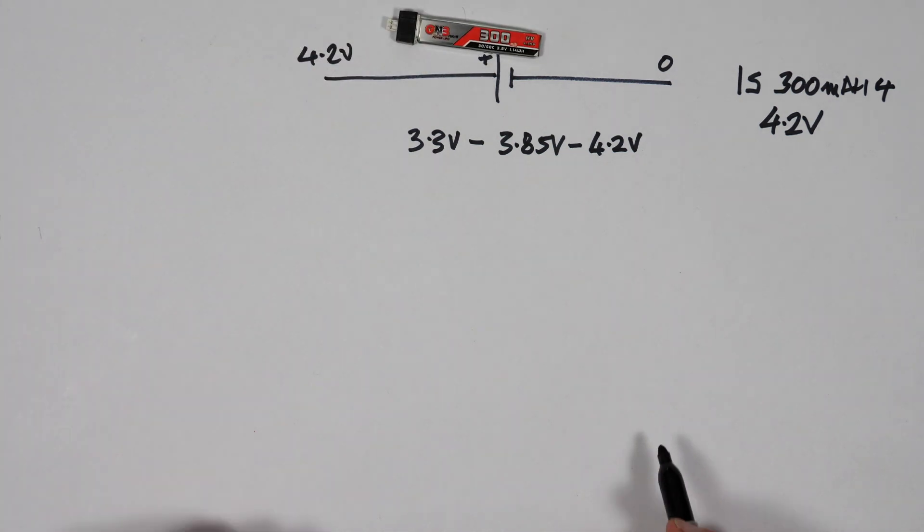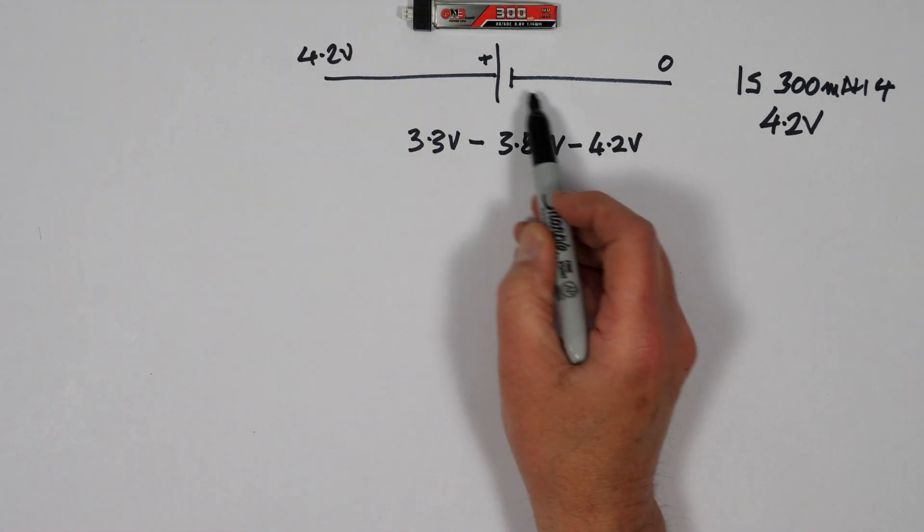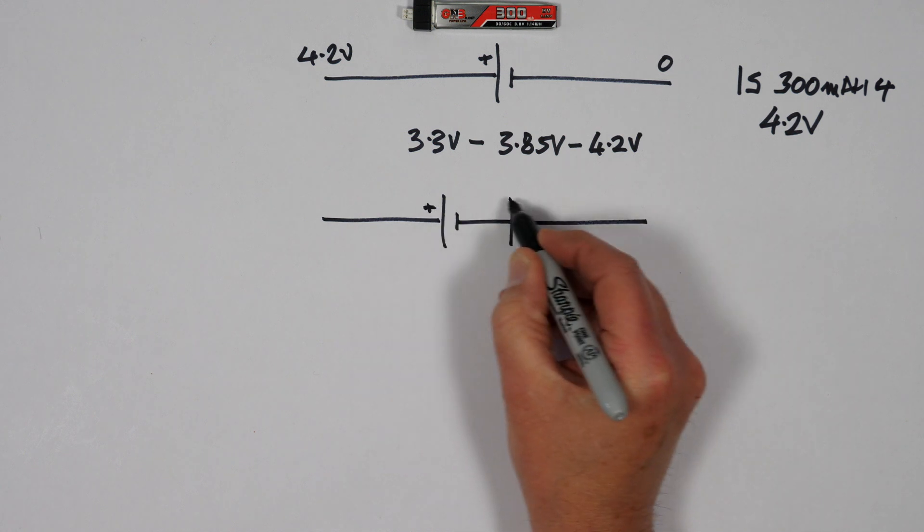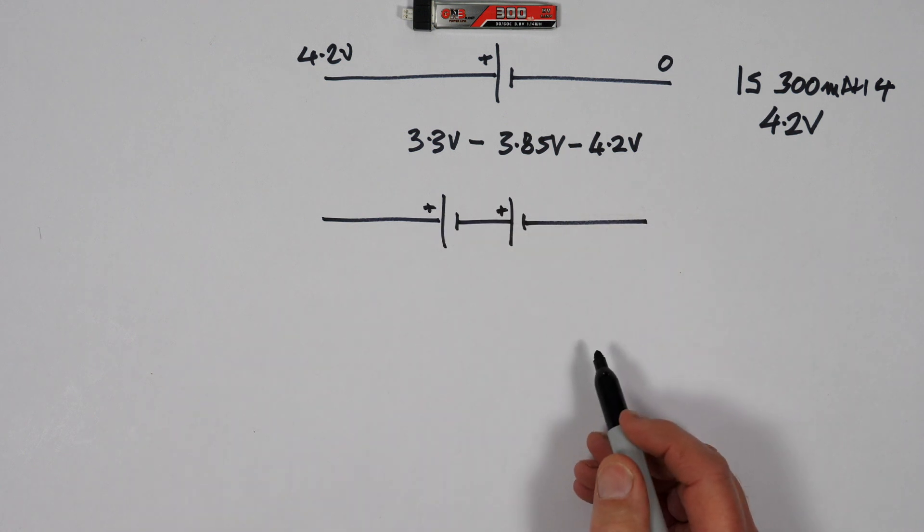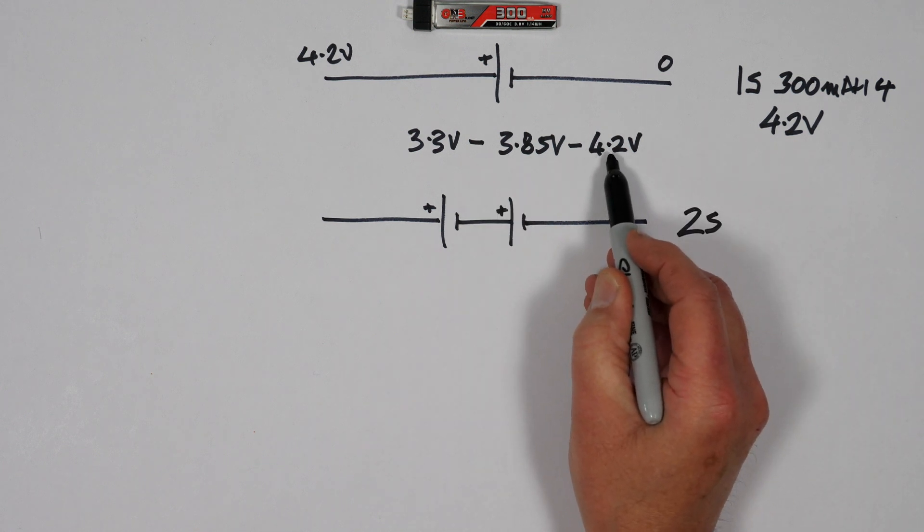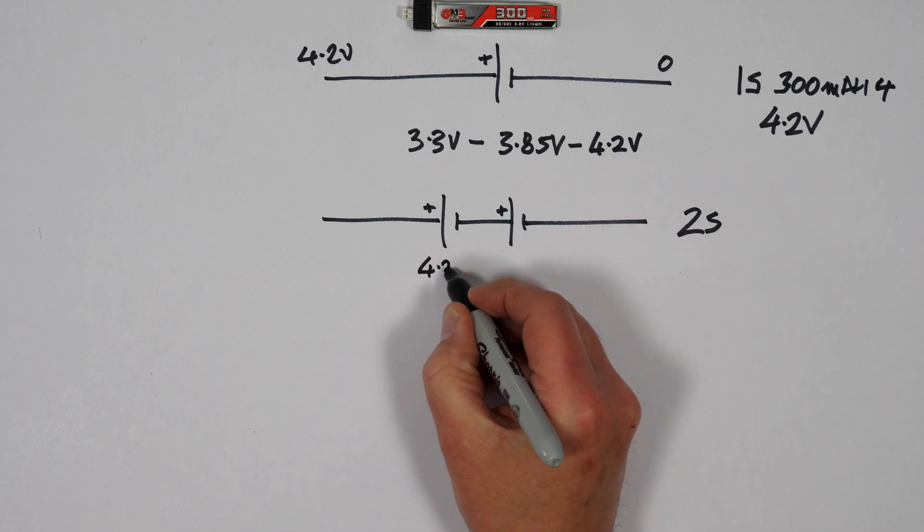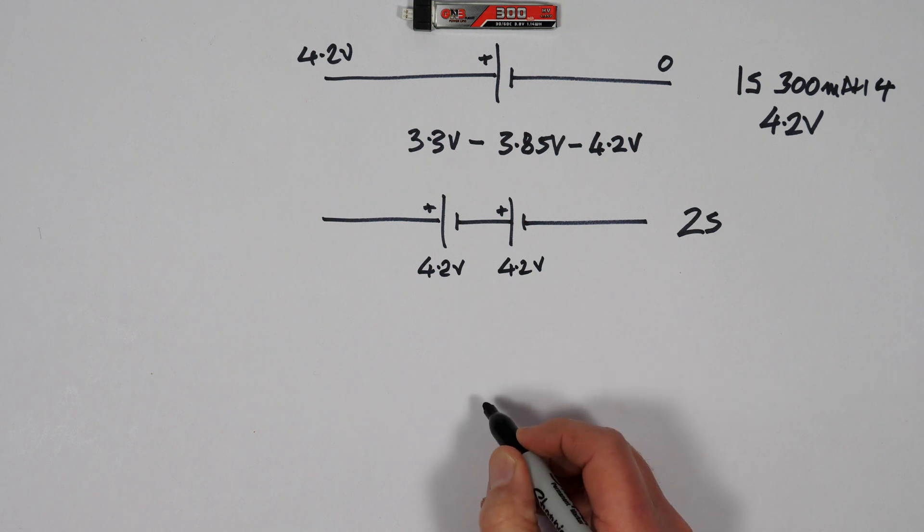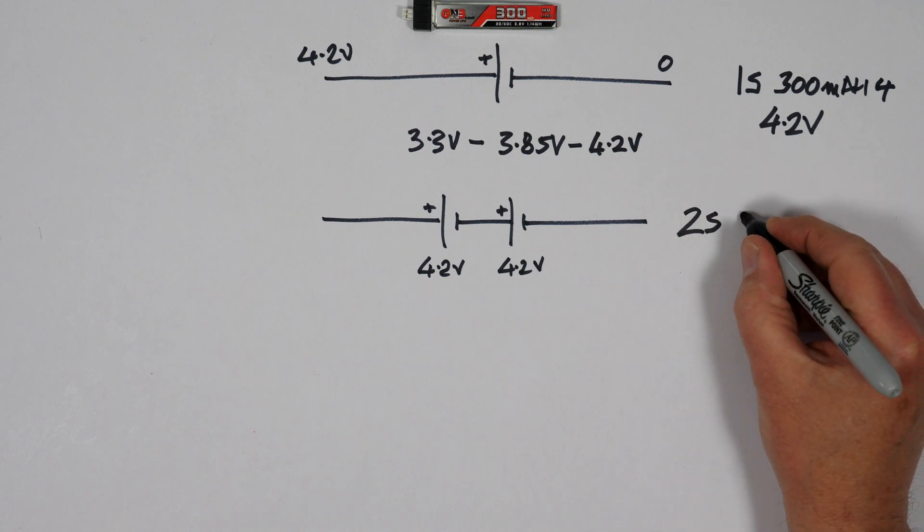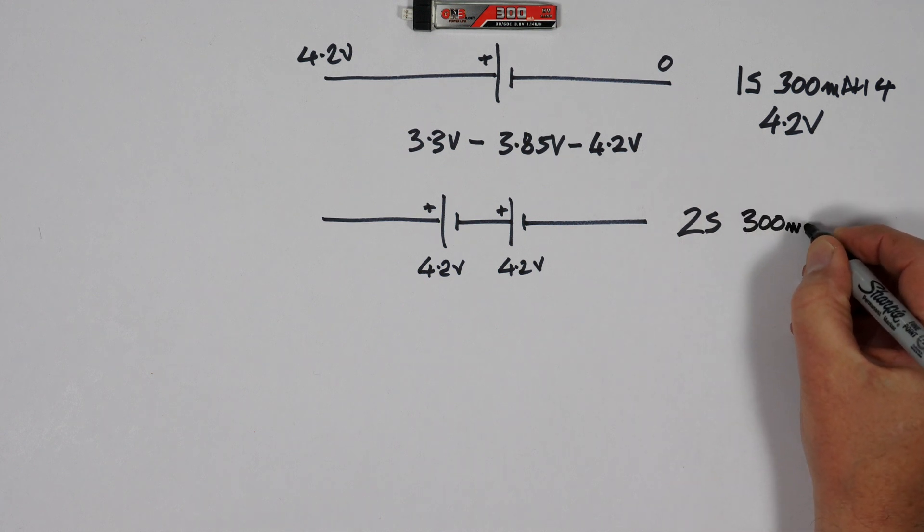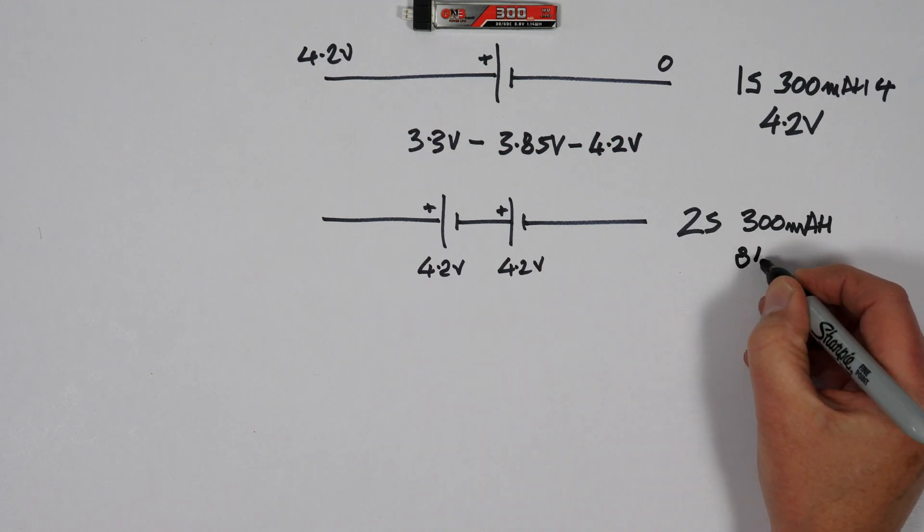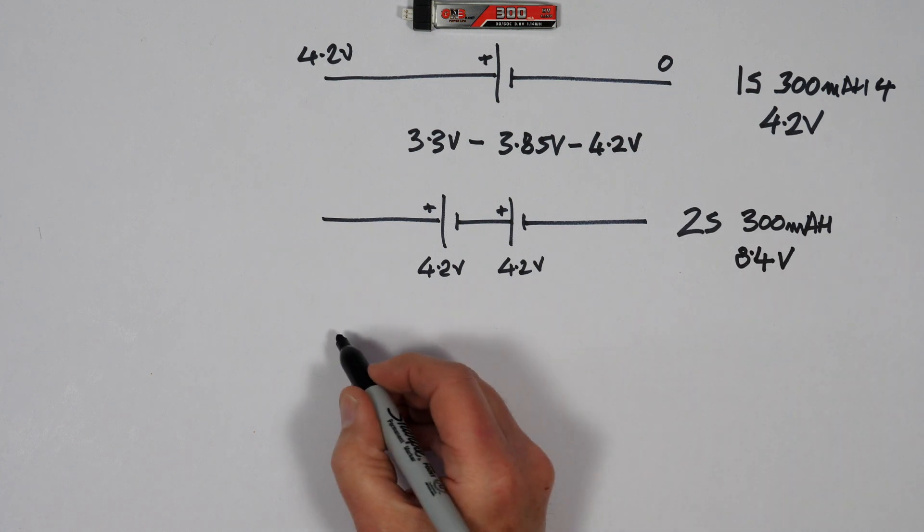Now a 2S battery is just two of these in series, like this. That's how they're wired up. That's positive, that's positive. A 2S is basically, working on the fully charged voltage, 4.2V—that's 4.2V there, 4.2V there. It's still 300mAh because that's the capacity of the battery. You simply add these together, so that gives you 8.4V.